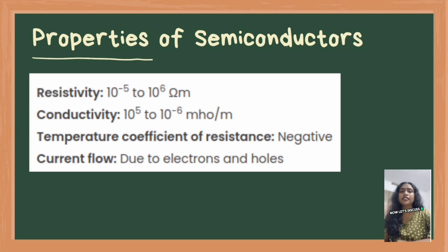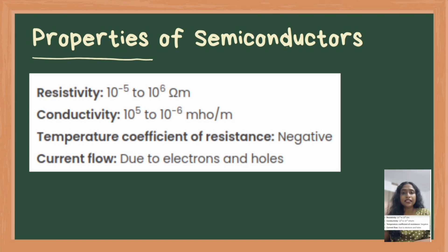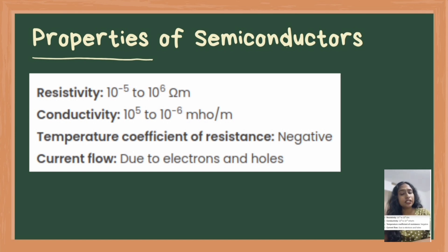Now, a few important points to remember about semiconductors. Resistivity: 10⁻⁵ to 10⁶ ohm-meter. Conductivity: 10⁵ to 10⁻⁶ siemens per meter. Temperature coefficient of resistance: negative. Current flow is only due to electrons and holes.